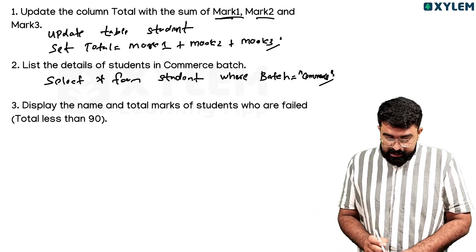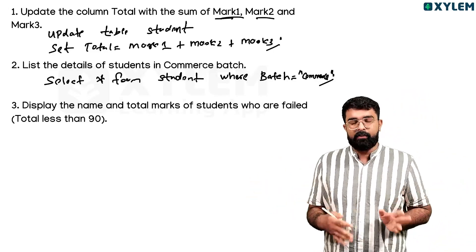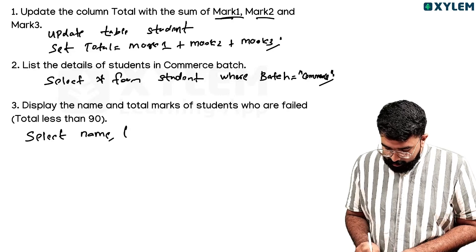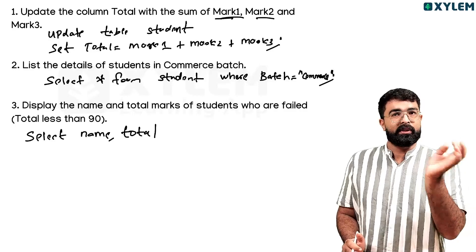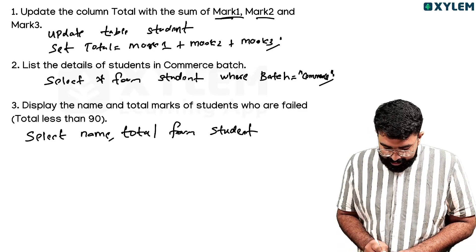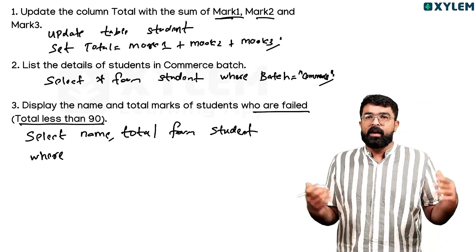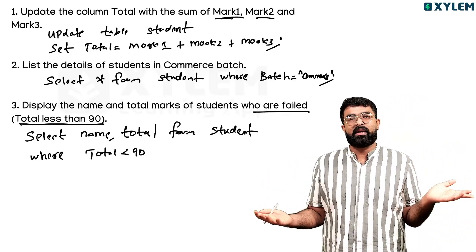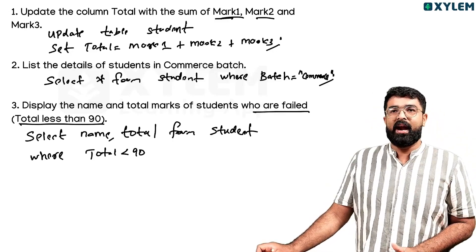Next: display the name and total marks of students who have failed. SELECT name, total FROM student WHERE total is less than 90. The condition is total less than 90 - or total less than 80 - for students who are failed.